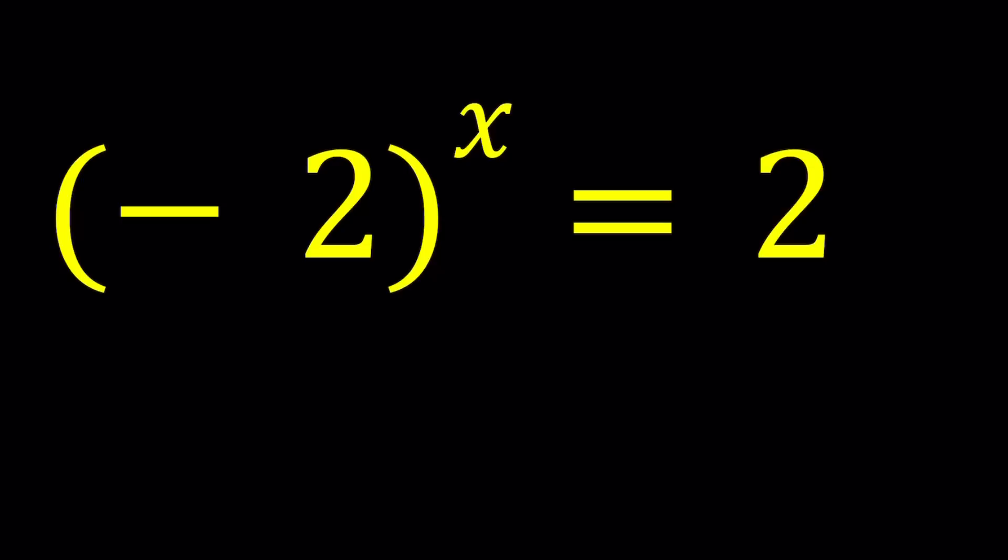We have a negative base, which is kind of problematic from a standpoint of real numbers, but with complex numbers, things are a little different. So here's what we're going to do: we're going to write both numbers in polar form, and then use the natural log and come up with a solution. We're going to look at some specific cases and then compare our results to Wolfram Alpha.